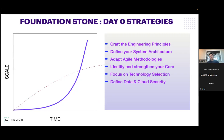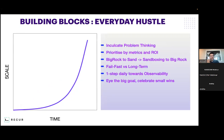Once we have defined our day zero strategies, there's something we need to do every day. As engineers we like solving problems — people who like solving problems will always think about solutions. But is that the right approach every time? First, whenever we are trying to solve a problem, we need to understand what has made that problem originate. Is it the real problem or is there any other problem we have to solve? That problem thinking needs to be inculcated within your team. Ask them questions and push them to ask questions back. Create an environment where there are a lot of questions and only a few solutions.